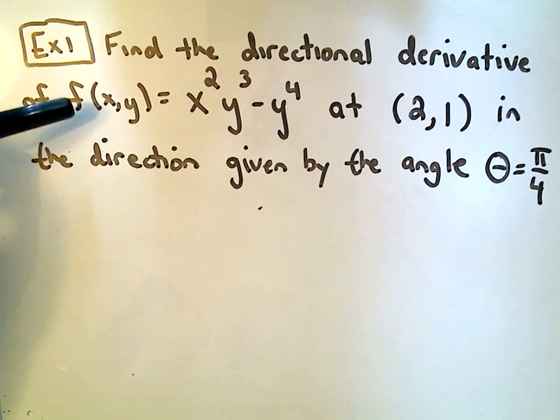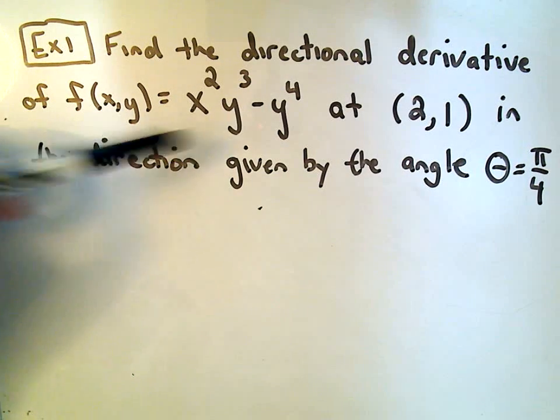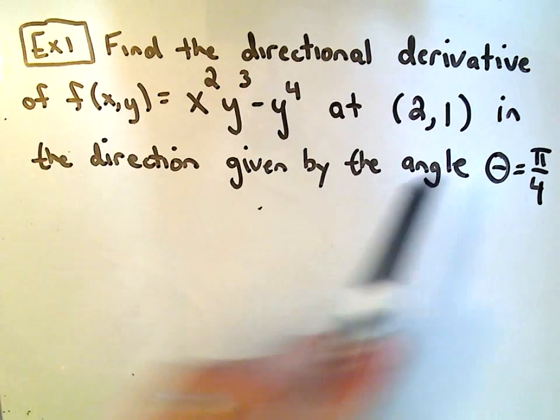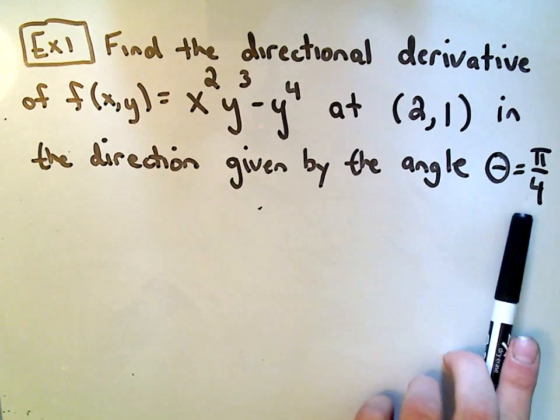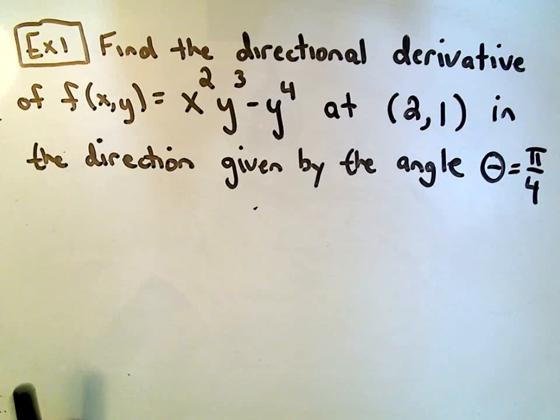Okay, so we want to find the directional derivative of the function x²y³ - y⁴ at the point (2,1), in the direction given by the angle θ = π/4.